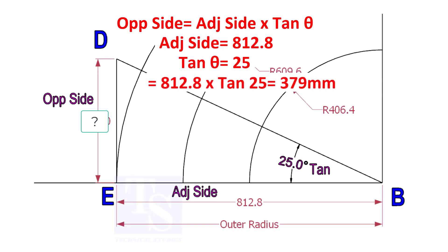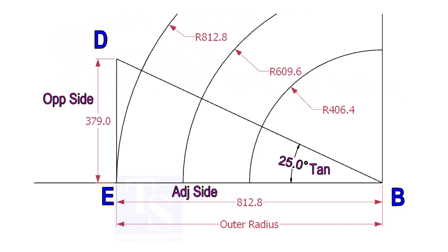812.8 into tan-25 equals 379 millimeters. Draw the line ED vertically and the slant line DB.